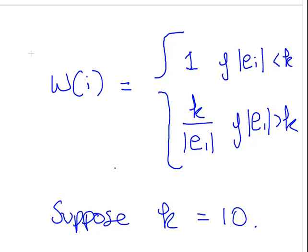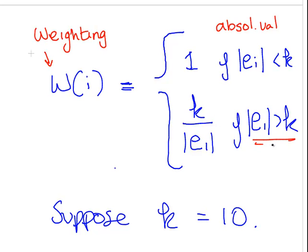This is the general setup. Now this is the weightings, W_i. There are two scenarios. If the absolute value of the residual is less than K, you just leave it as 1. But if the absolute value of the residual is greater than K, then you do this little calculation: K divided by the absolute value of E_i.